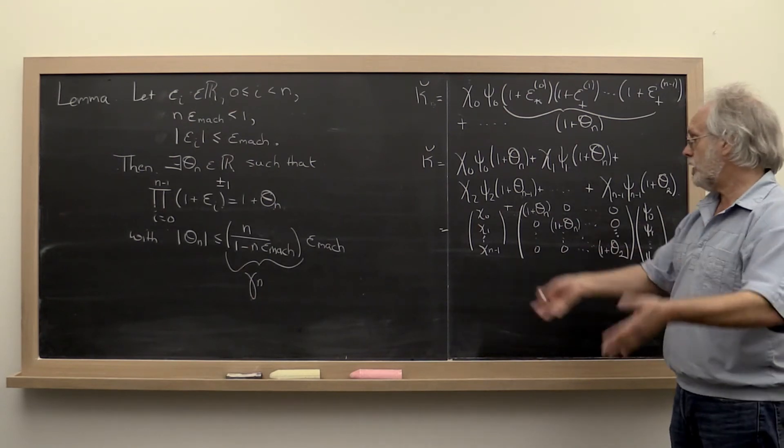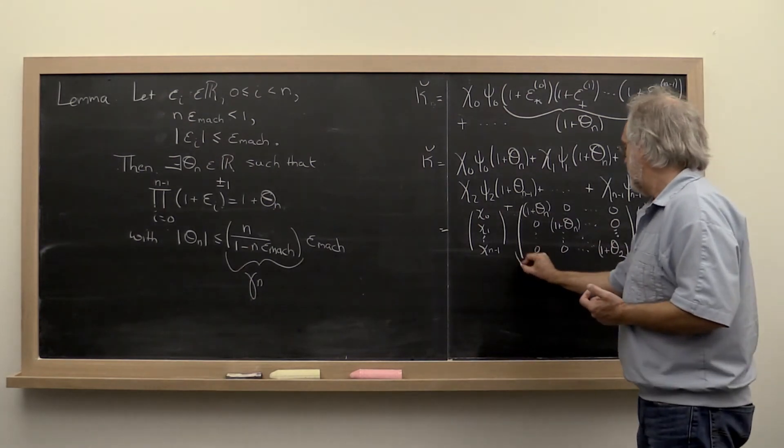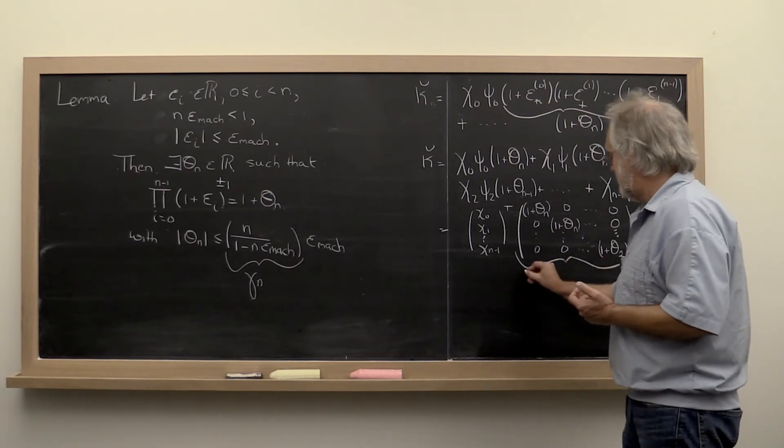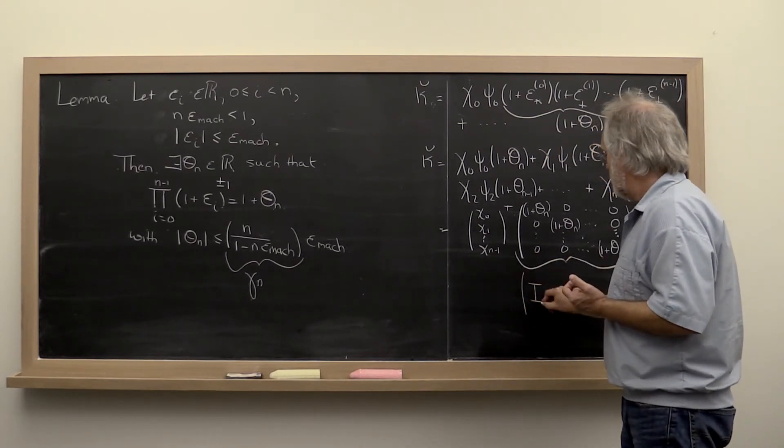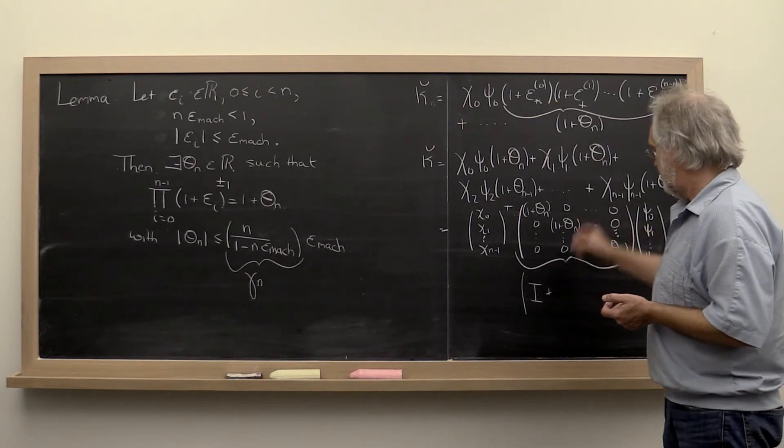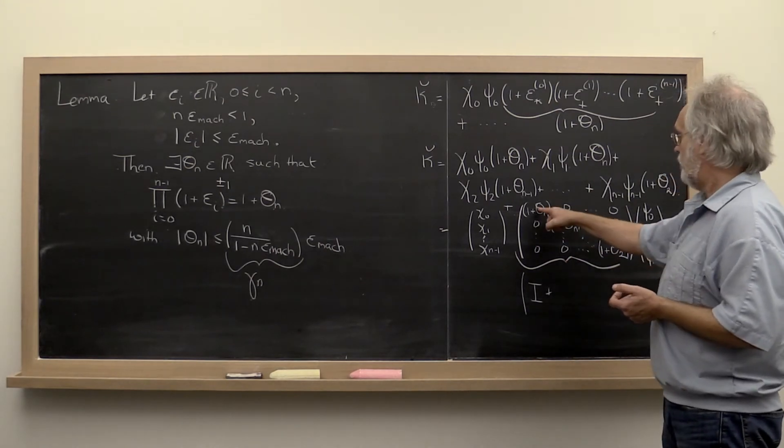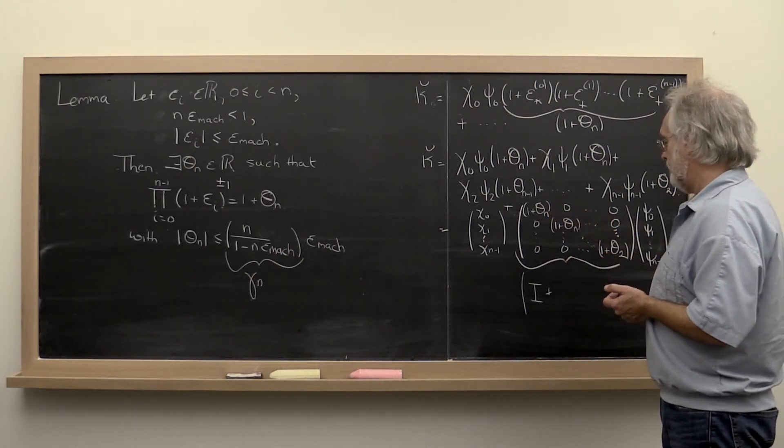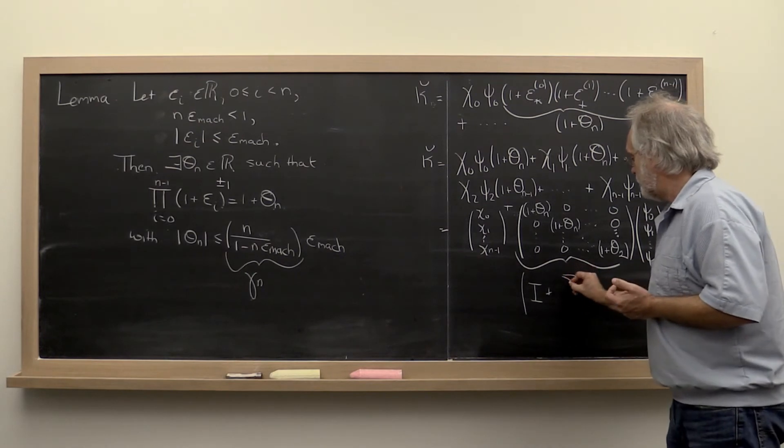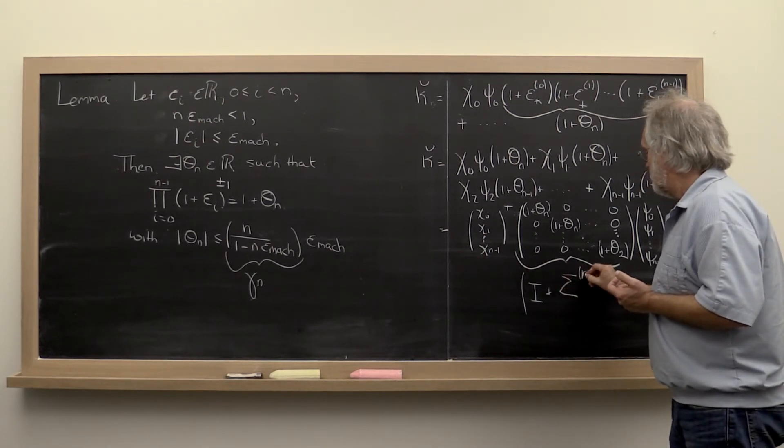And finally we can go one step further yet. And we can recognize that this is just the matrix 1 plus the diagonal matrix with theta_n, theta_n, etc. on the diagonal. And that matrix we're going to call sigma super n.